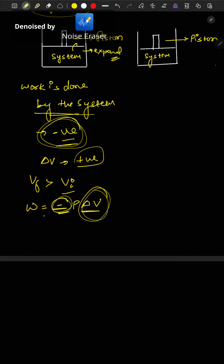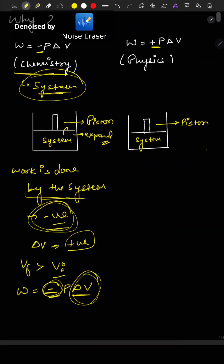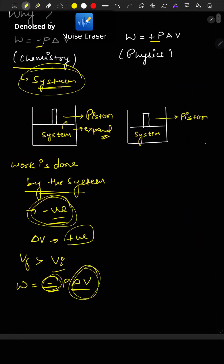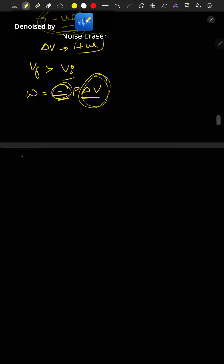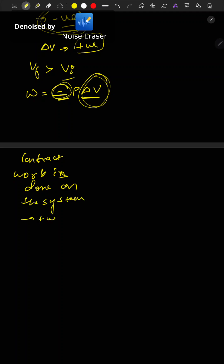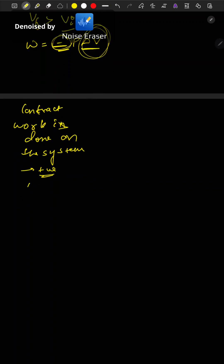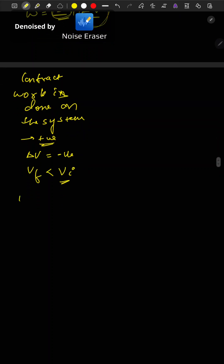Since delta V is positive during expansion, we need the negative sign, hence W = -P·delta V. Vice versa, when work is done on the system by the surrounding, the system contracts. Work done on the system is considered positive, and delta V is negative as V final is less than V initial. So W = -P·delta V gives a positive result: negative times negative equals positive.